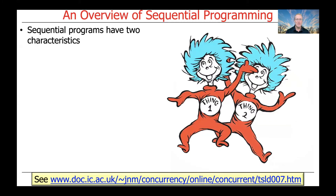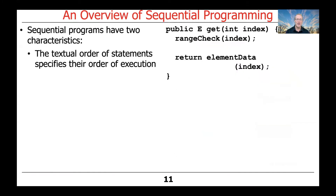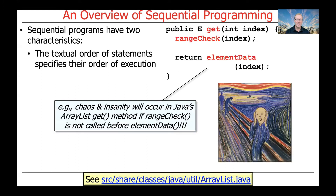Sequential programs have two key characteristics. First, the textual order of statements specifies their order of execution. Consider, for example, the get method in the ArrayList class from the Java Collections Framework. Chaos and insanity will occur in this get method implementation if the range check method is not called before the element data method.